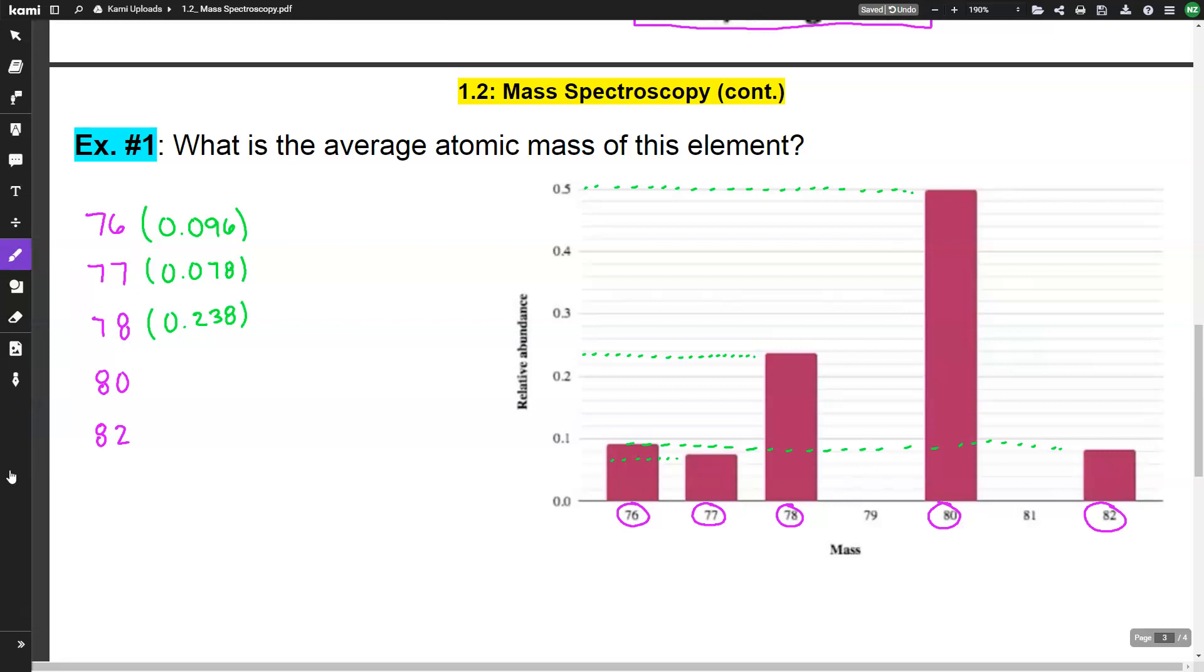80 is pretty much right on the line, 0.5. So let's keep that one easy. And 82 is almost right on the line there too. How about 0.082? And these are just estimations.